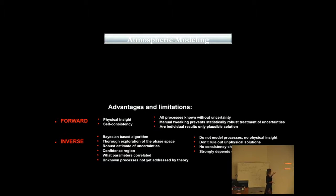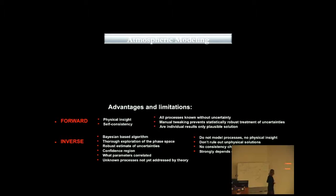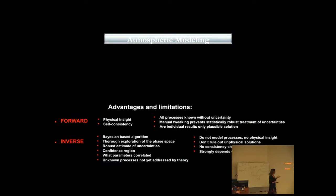However, this Bayesian-based algorithm thoroughly explores the phase space of our parameters and puts a robust estimate on our uncertainties by not defining a best-fit model, rather than the confidence region. The posterior distribution shows which parameters are correlated and whether the data are sufficient to give us any constraints. This approach can allow us to even address some unknown processes that are not yet addressed in the theory.